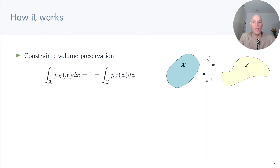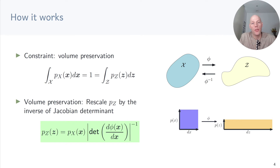By definition, the integral of a density over the entire domain is 1 — that's true for both px and pz. If we now transform a random variable x into z via phi, then we know that the Jacobian determinant tells us, loosely speaking, how much bigger z is than x. And if we want to compute pz from px and the transformation, we need to divide by the Jacobian determinant to make pz a valid density.